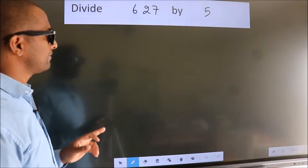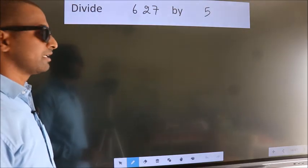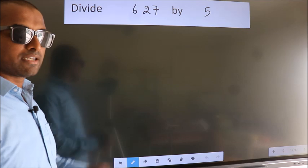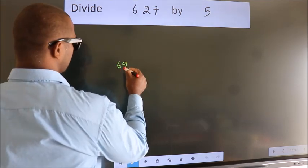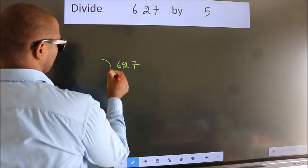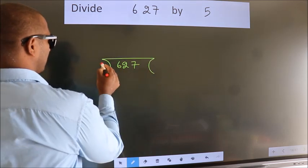Divide 627 by 5. To do this division, we should frame it in this way: 627 here, 5 here.